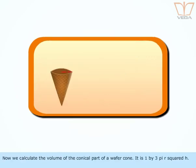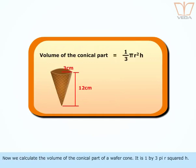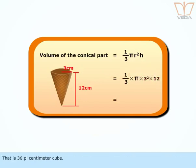Now, we calculate the volume of the conical part of a wafer cone. It is 1/3 π r² h, which gives 36π cm³.